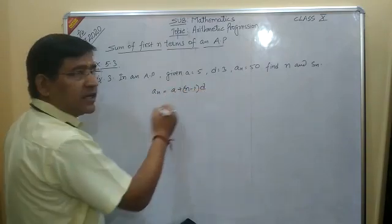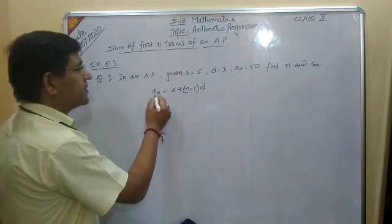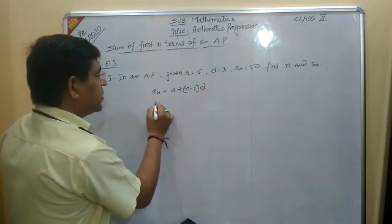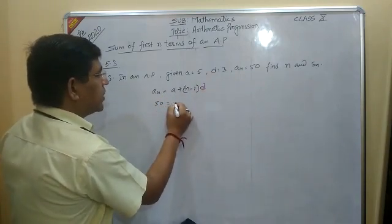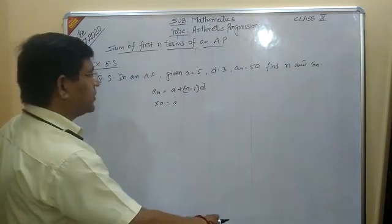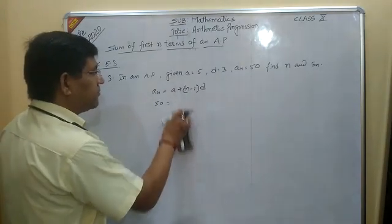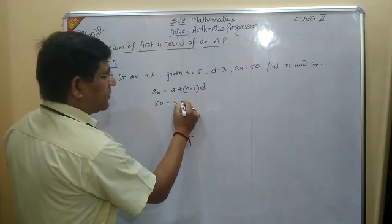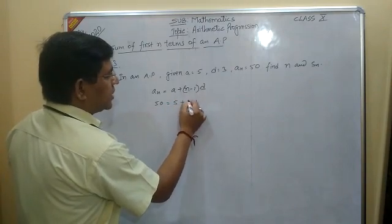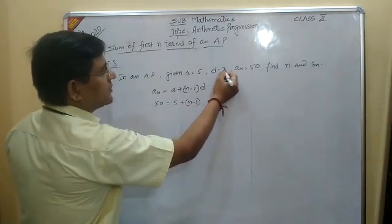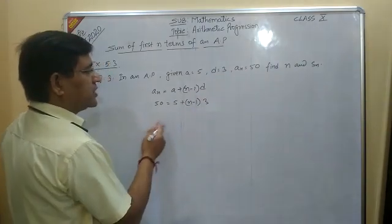Now you substitute the value. a_n value is given as 50 equals a. a is also given—the value of a is 5, right? Put it: 5 plus (n minus 1) into d. d is given 3. This is 5.